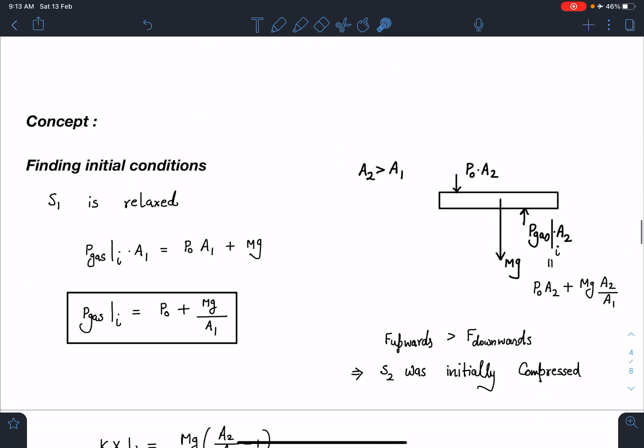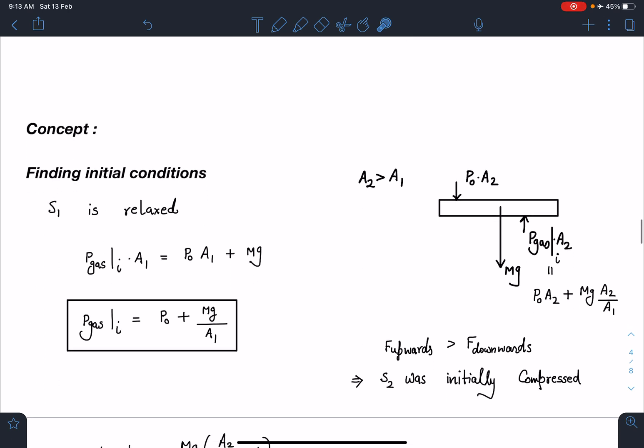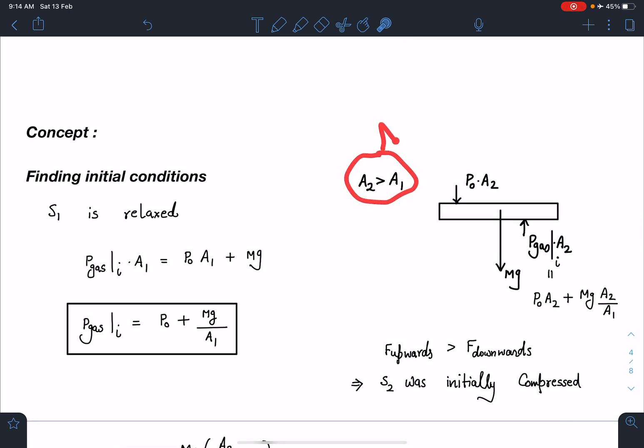Let's find out the initial conditions. Since it is given that spring S1 is relaxed, on balancing the forces on the piston the spring force will be zero. So atmospheric pressure and the weight mg are the two forces. The initial pressure of the gas is known to you: P0 plus mg by A1. I am going to solve this problem under the assumption A2 greater than A1. In the last we will check if our answers are positive or negative. Based on that we can change it, but method-wise it is going to be the same. That's why I am solving in symbols.